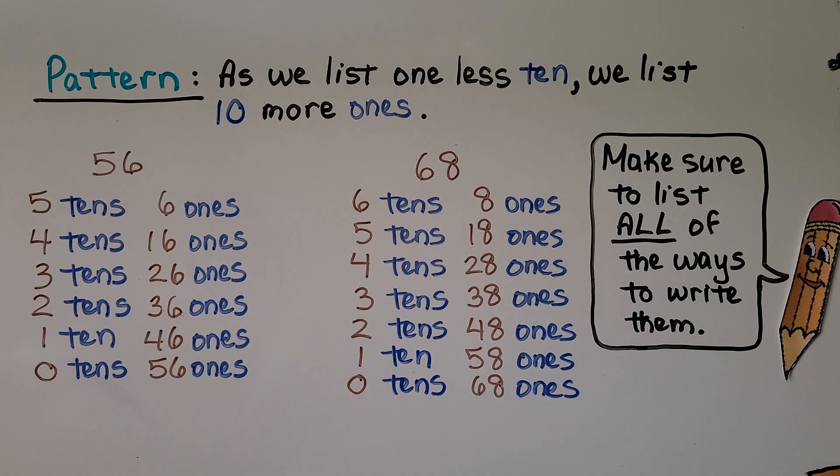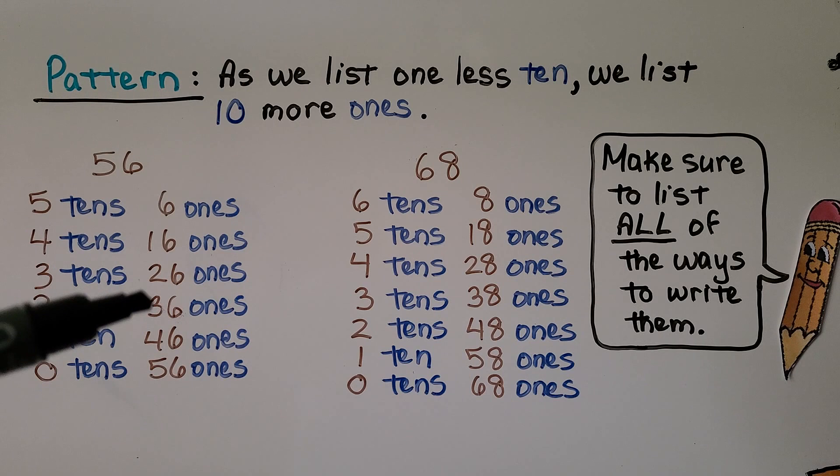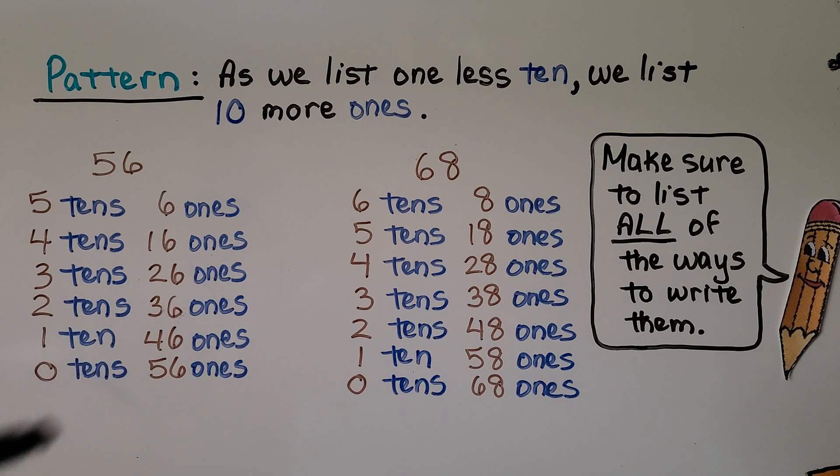And we make sure to list all of the ways to write them. 56 has 5 tens, 6 ones. We start with the 5 tens and 6 ones. And we slowly take away 1 ten and give it to the ones as 10 ones. So it's going 5, 4, 3, 2, 1, 0. And the ones are going 6, 16, 26, 36, 46, 56.